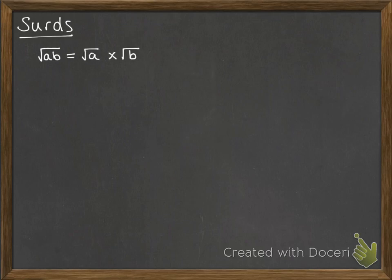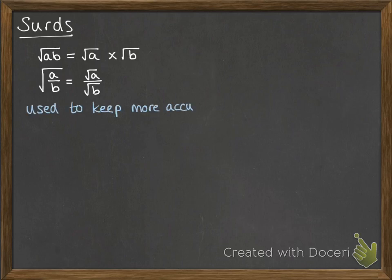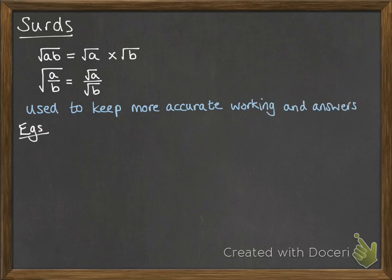So first of all, if you've got the square root of A times B, that's the same as if you separate them and do the square root of A times the square root of B. The same applies for division. We use surds to keep our working and answers more accurate. Let's have a look at some examples.